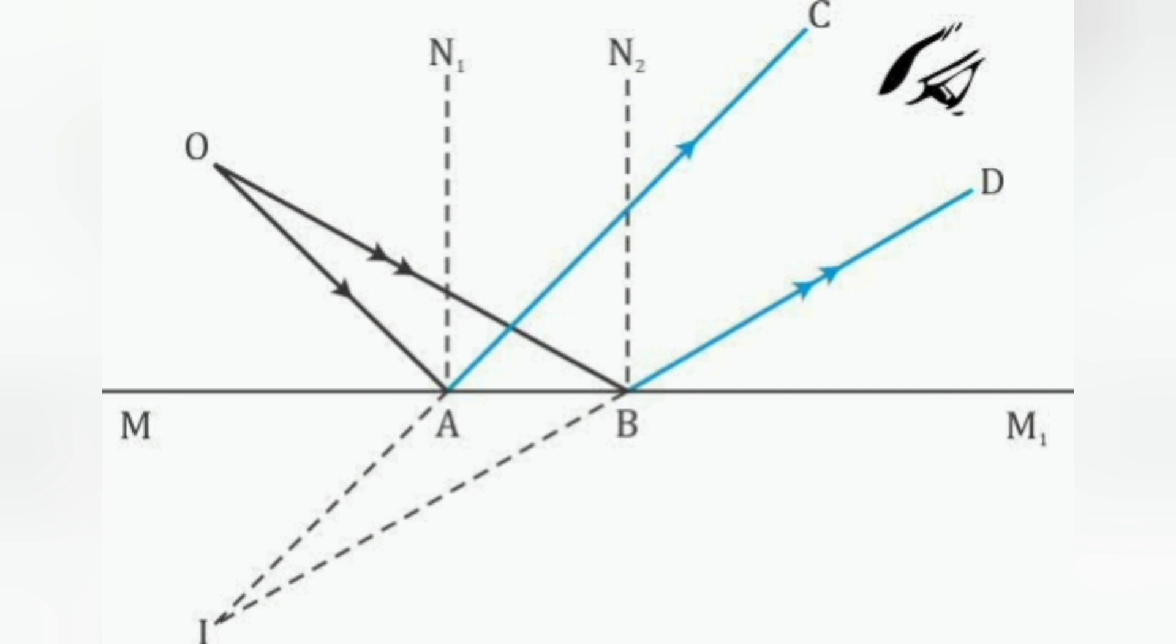Measure the distances OM and IM using a ruler. You will find that OM is equal to IM. Thus, the perpendicular distance of the object from the mirror is equal to the perpendicular distance of the image from the mirror. In other words, the image is as far behind the mirror as the object is in front of it.